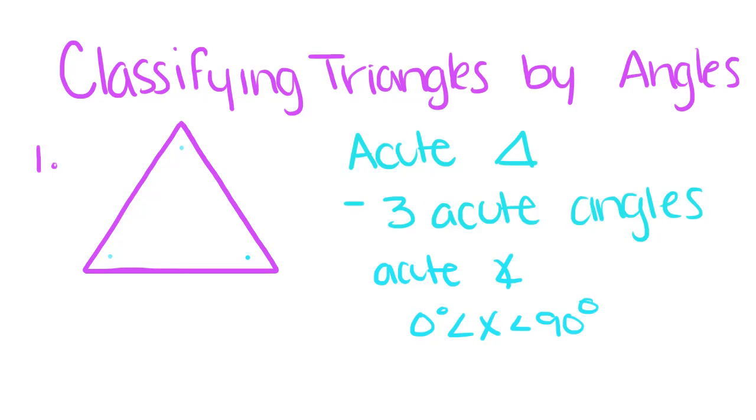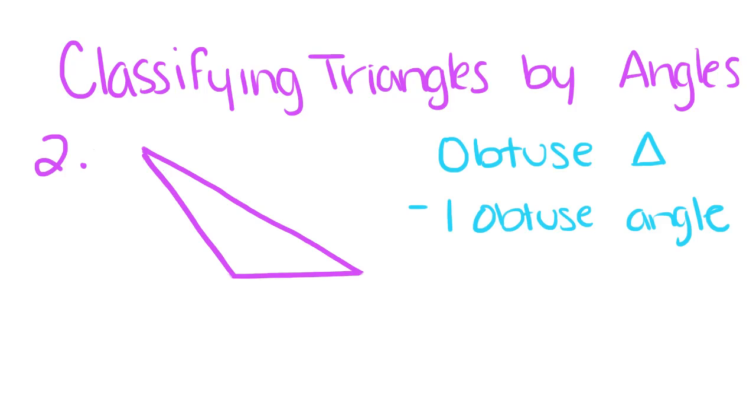Next we have the obtuse triangle, and it has one obtuse angle, and for this one, that is right here. And an obtuse angle is just an angle that is greater than 90 degrees but less than 180 degrees.